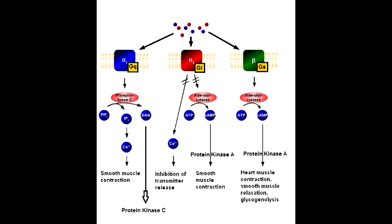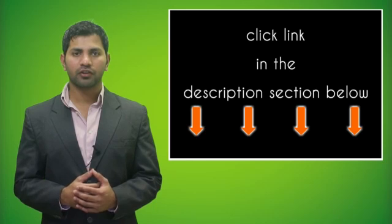Describe the signaling cascade when M2, A2, and D2 receptors are stimulated. When these receptors are stimulated, the GI protein inhibits adenylyl cyclase, leading to a decrease in cAMP and therefore a decrease in protein kinase A. A helpful memory tip: GI and GS both involve all the A's — adenylyl cyclase, ATP, cAMP, and protein kinase A.